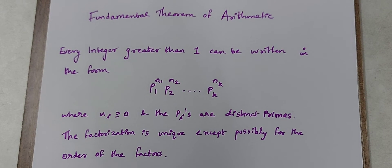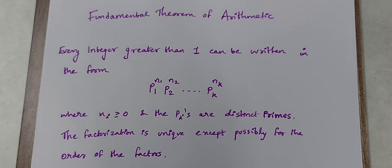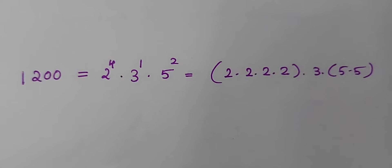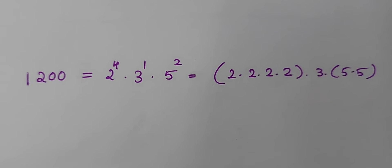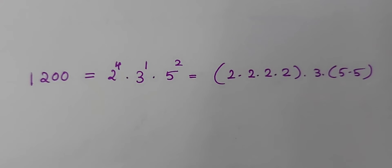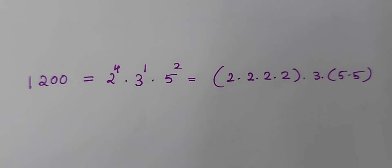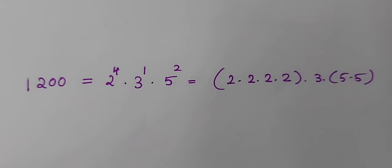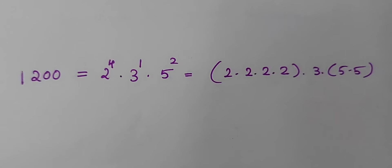When we say the factorization is unique except possibly for the order of the factors, what does that mean? We will see using an example. So first let's see an example and then we will understand the statement itself. Let's consider the number 1200 as an example.